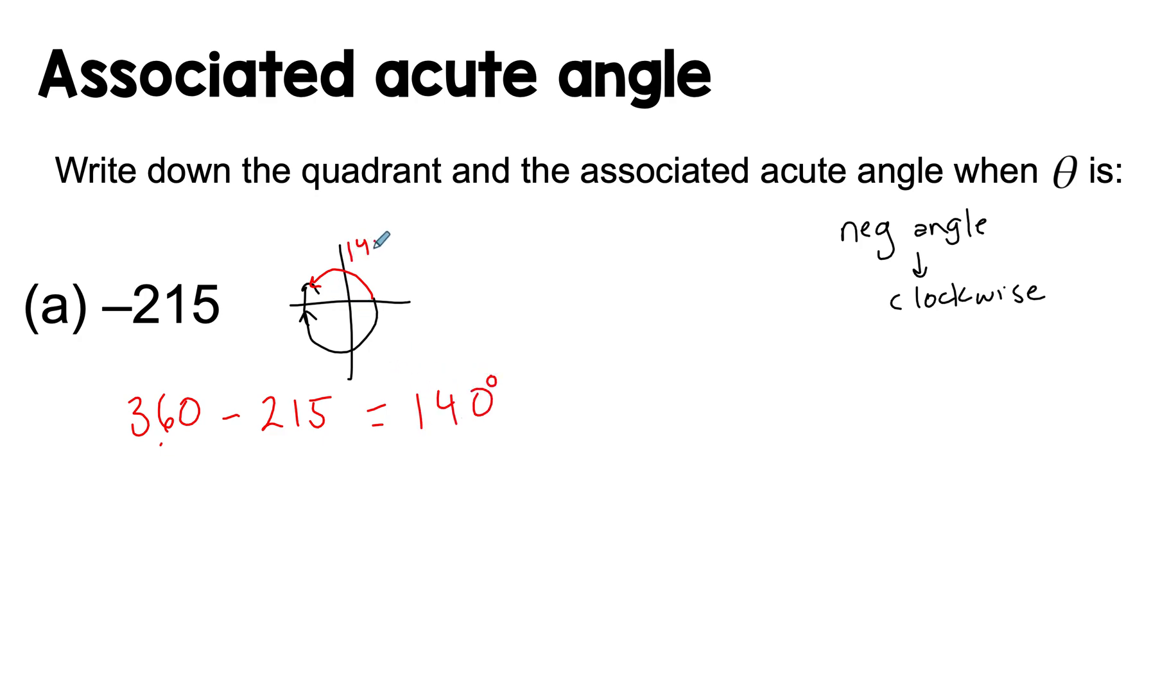This is 145 because they both should add up to, so this angle and the 215 should add up to 360. So 360 minus 215 is 145, and 145 is in the second quadrant.